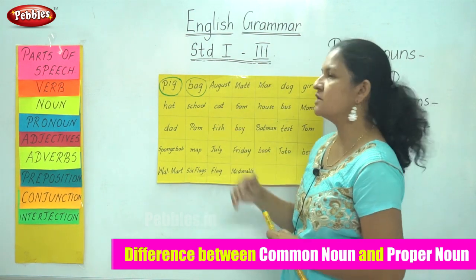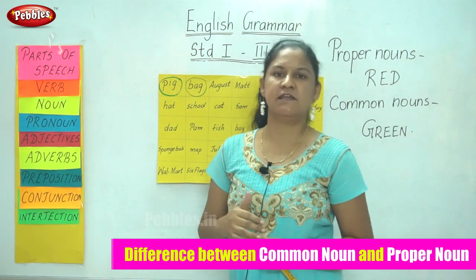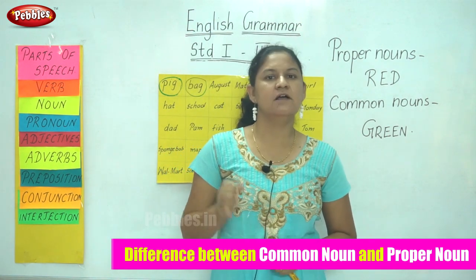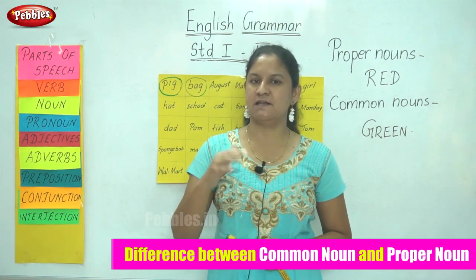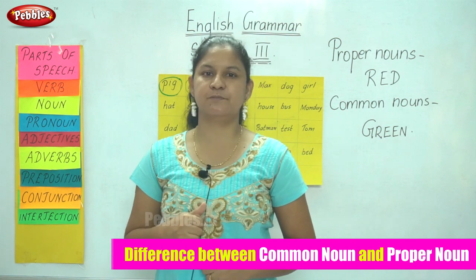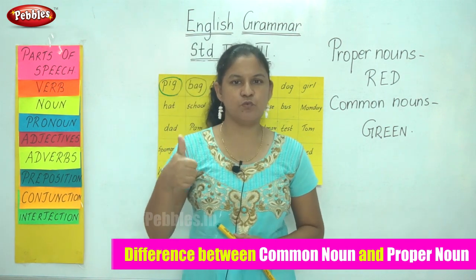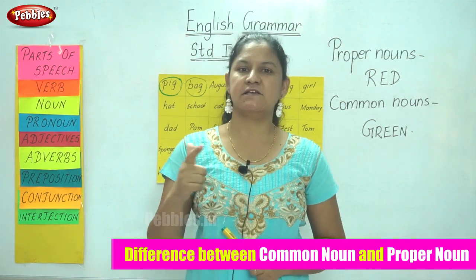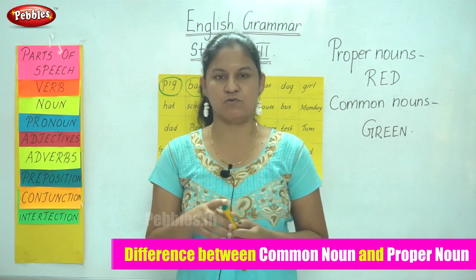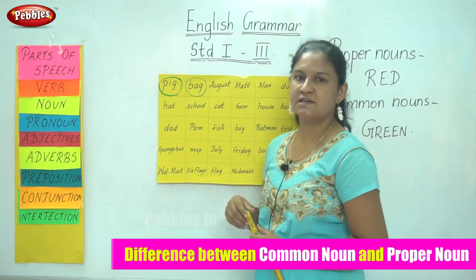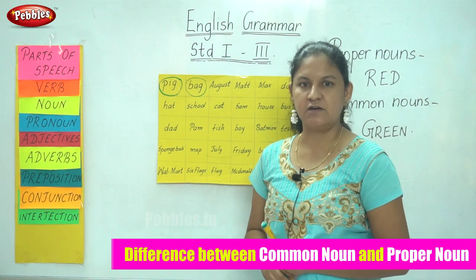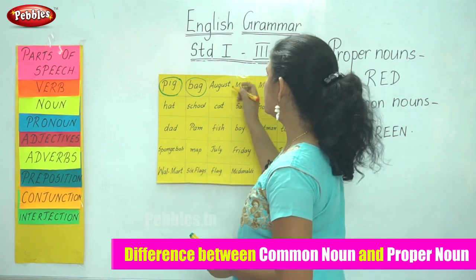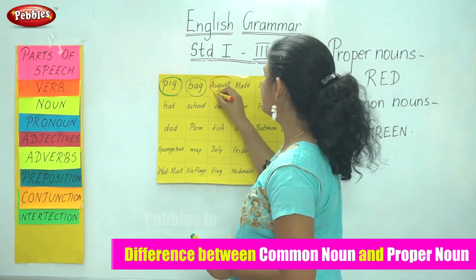The next word is August. Normally, the days of the week and months of the year begin with a capital letter and hence are proper nouns. Days of the week and months of the year always begin with a capital letter and are called proper nouns. August is the month of the year and is a proper noun, so I use my red sketch to mark the word August.